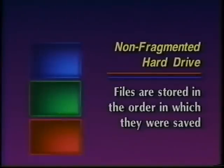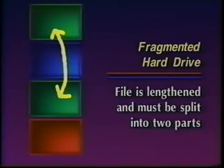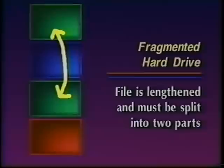Hard drives are also subject to data fragmentation. Say you save three files — the red, green, and blue boxes in this example. Now suppose you make the green file longer. The hard drive has to store the rest of the file in the first available free space, which is after the third file. So now when you ask the hard drive to read that second file, it has to read it in two parts.